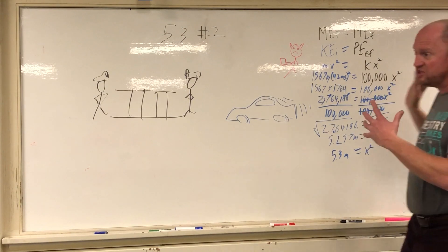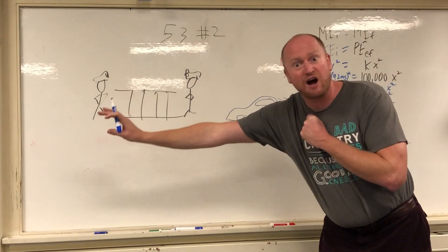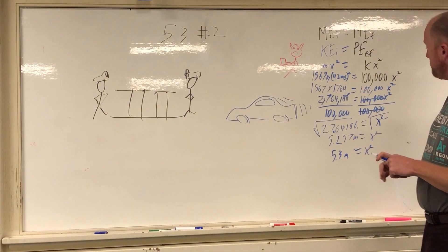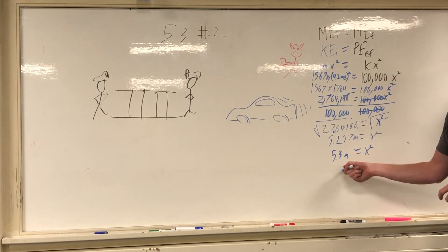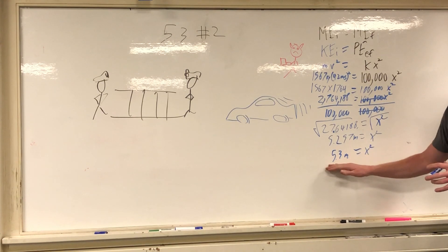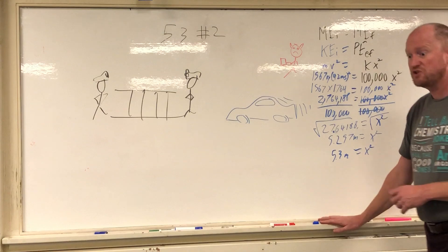So that means that that net is going to stretch more because it's going to have to stretch more to stop your more energetic vehicle. So just be prepared for the fact that you're probably going to get a number that is bigger than this, possibly significantly bigger, possibly not, but expect your number to be bigger than mine. And this concludes 5.3 number two.